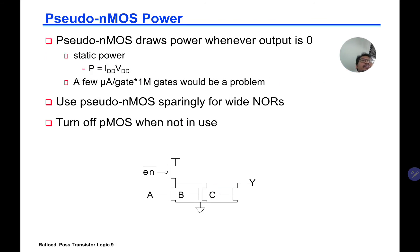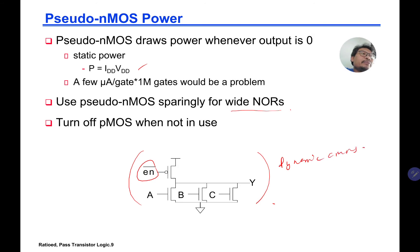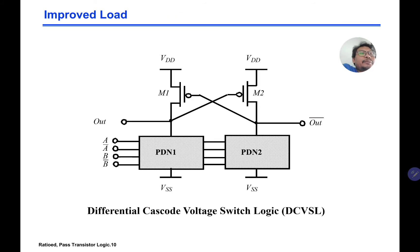Pseudo NMOS draws power whenever the output is zero — static power IDD from VDD. A few microwatts per gate times one million gates will be a problem. One solution is to turn off the PMOS when not in use using an enable signal — sort of like dynamic CMOS, which we'll see later. The dynamic CMOS idea is to avoid static power by switching off the load completely. This is what DCVSL tries to do, though it's slightly different from the dynamic one.